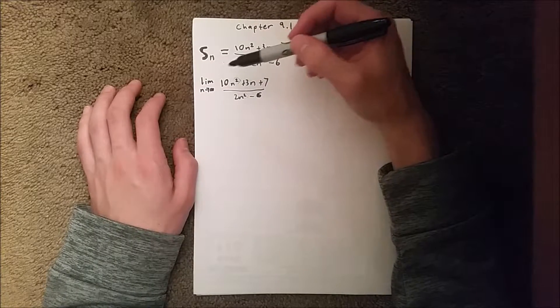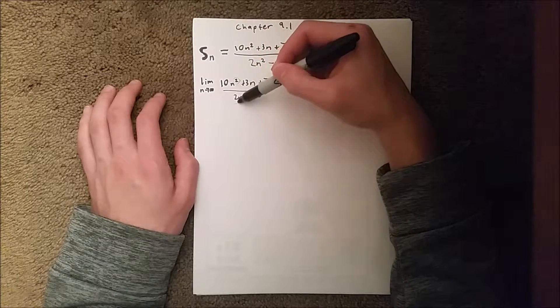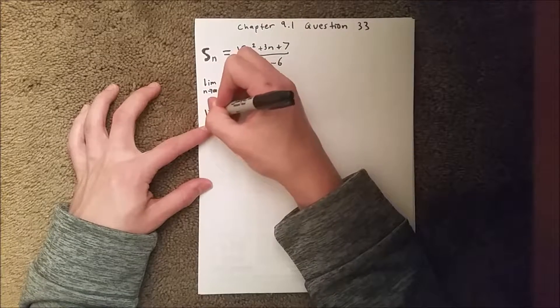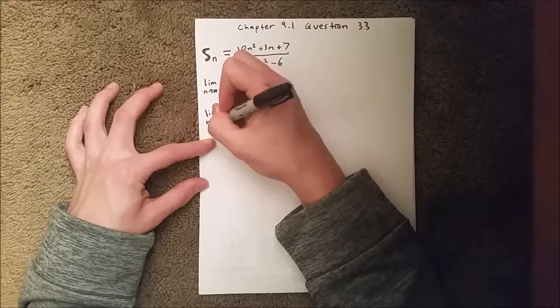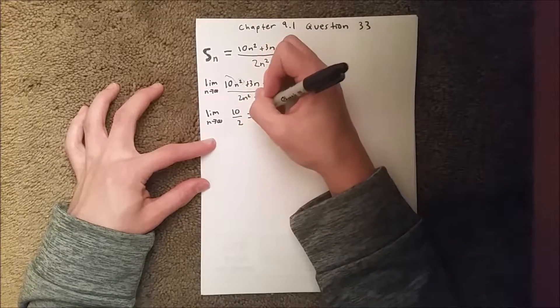So the limit as n goes to infinity of 10 over 2 is equal to 5. So this sequence converges to 5.